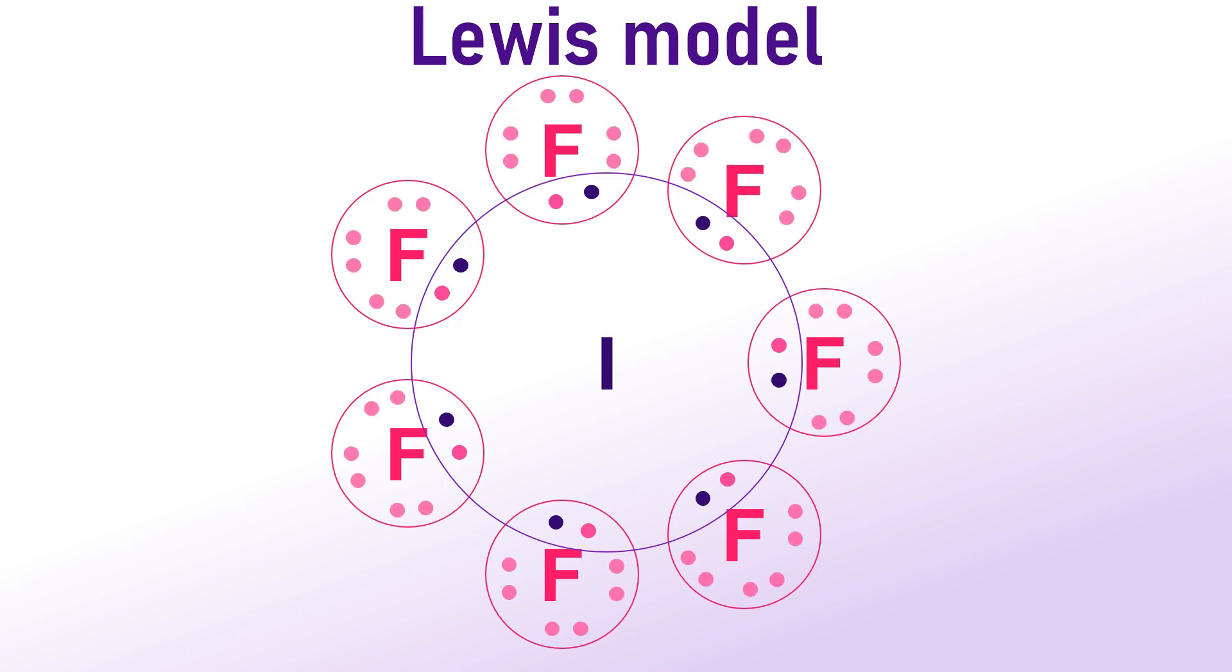Of course, there are also 3 lone pairs on each fluorine atom. However, this Lewis model alone does not provide information about molecular shapes or bond angles. To understand these aspects, we need to employ valence bond theory and the concept of hybridization, originally proposed by Linus Pauling.